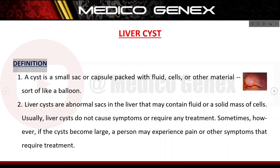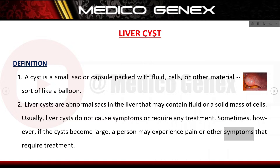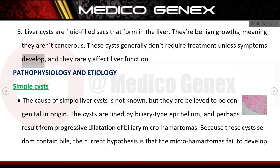Liver cyst definition: a cyst is a small sac or capsule packed with fluid, cells, or other material, sort of like a balloon. Liver cysts are abnormal sacs in the liver that may contain fluid or a solid mass of cells. Usually liver cysts do not cause symptoms or require any treatment. Sometimes, however, if the cysts become large, a person may experience pain or other symptoms that require treatment. Liver cysts are fluid-filled sacs that form in the liver; they are benign growths, meaning they aren't cancerous.